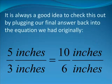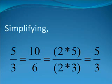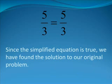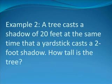It is always a good idea to check this out by plugging our final answer back into the equation we had originally. 5 inches divided by 3 inches is equal to 10 inches divided by 6 inches. Simplifying, 5 over 3 is equal to 10 over 6. And 10 over 6 is equal to 2 times 5 divided by 2 times 3, which is equal to 5 divided by 3 because the 2's cancel. Thus, we have found our final answer and verified it.